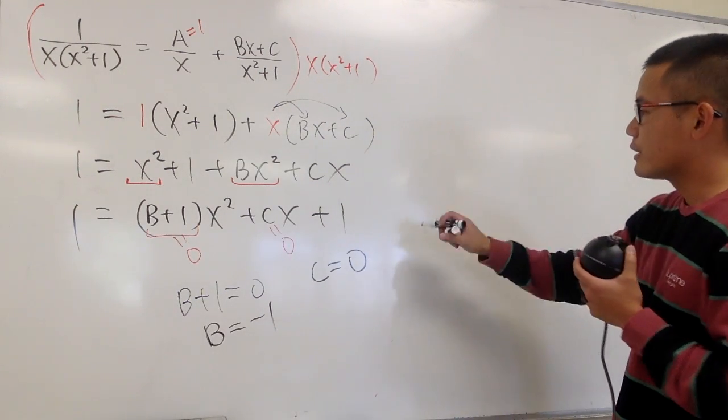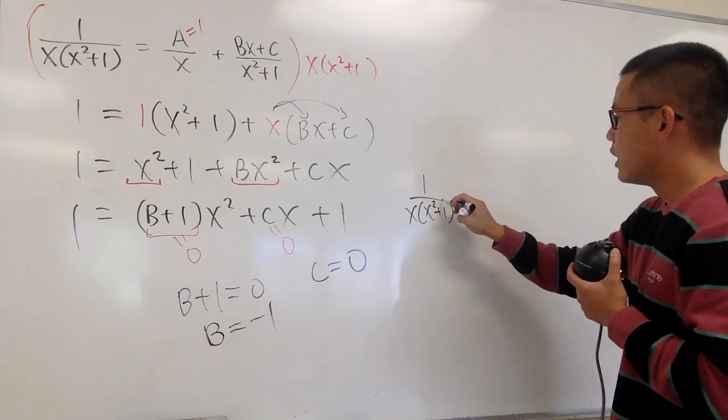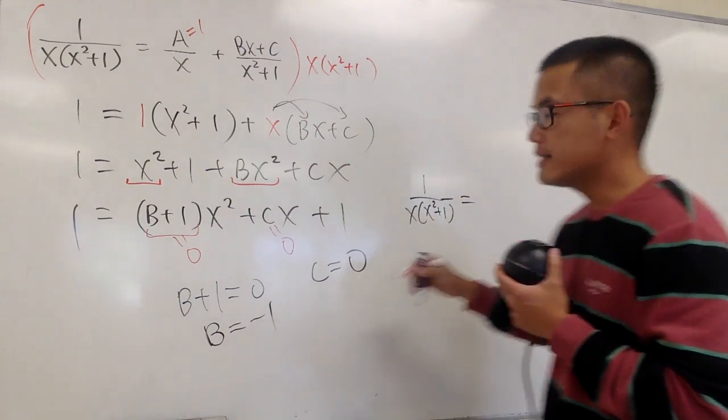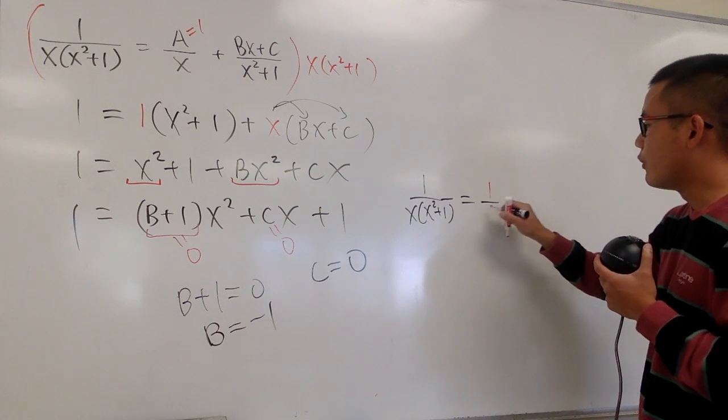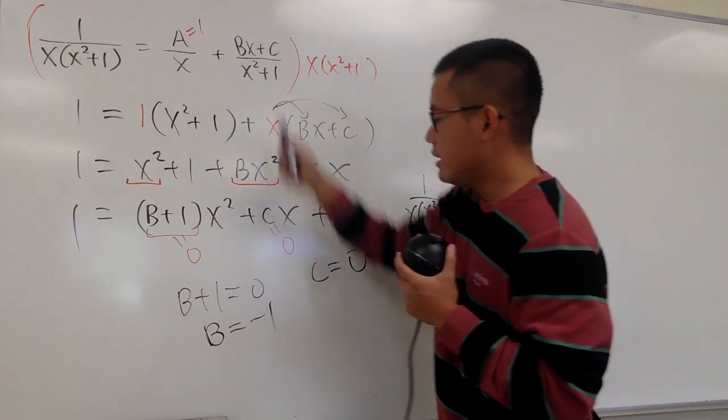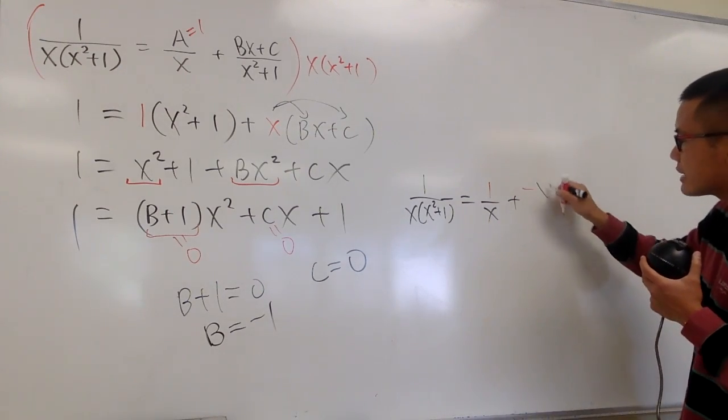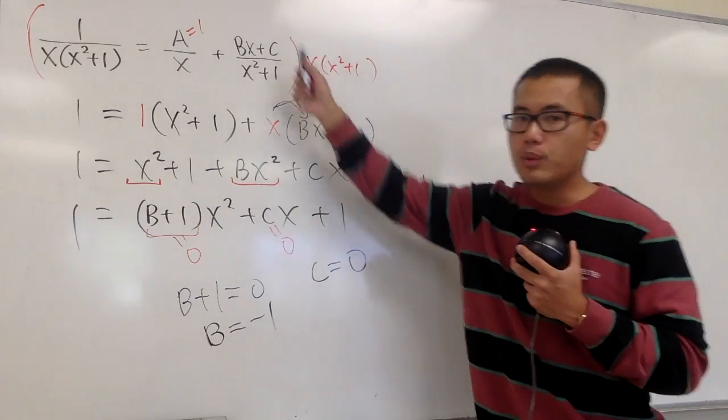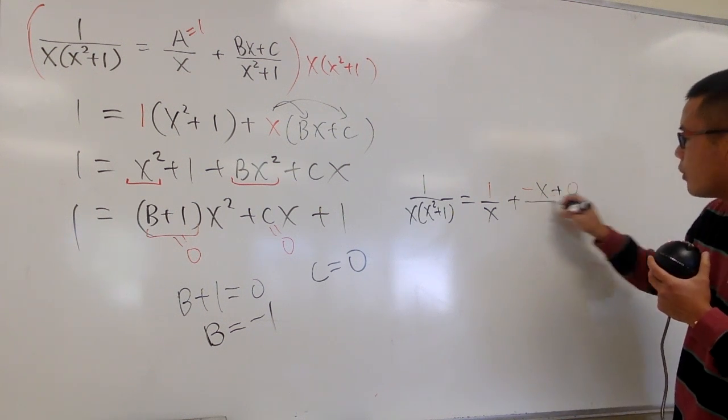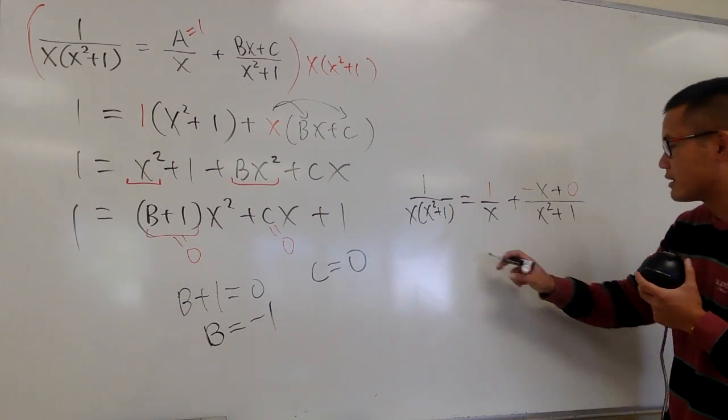So, at the end, we know that 1 over x times x squared plus 1, all this right here, it's the same as saying, 1 over x. That's the a value, over x, and then plus b is negative 1, so we have the negative 1 times x, and then plus c, which is 0, so let me just write it down, it's how it is, plus 0, over x squared plus 1. And of course, we can just rewrite this better.